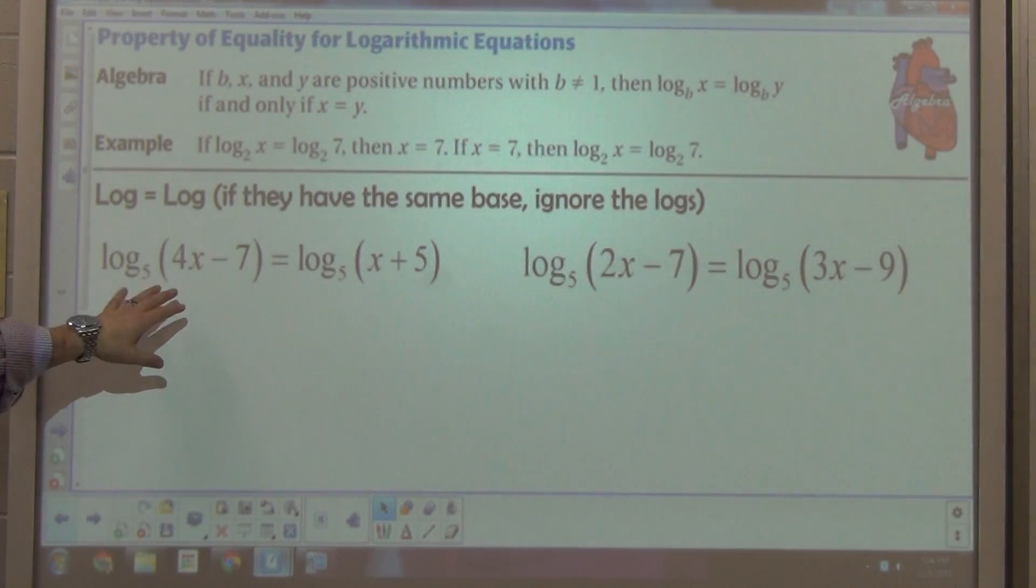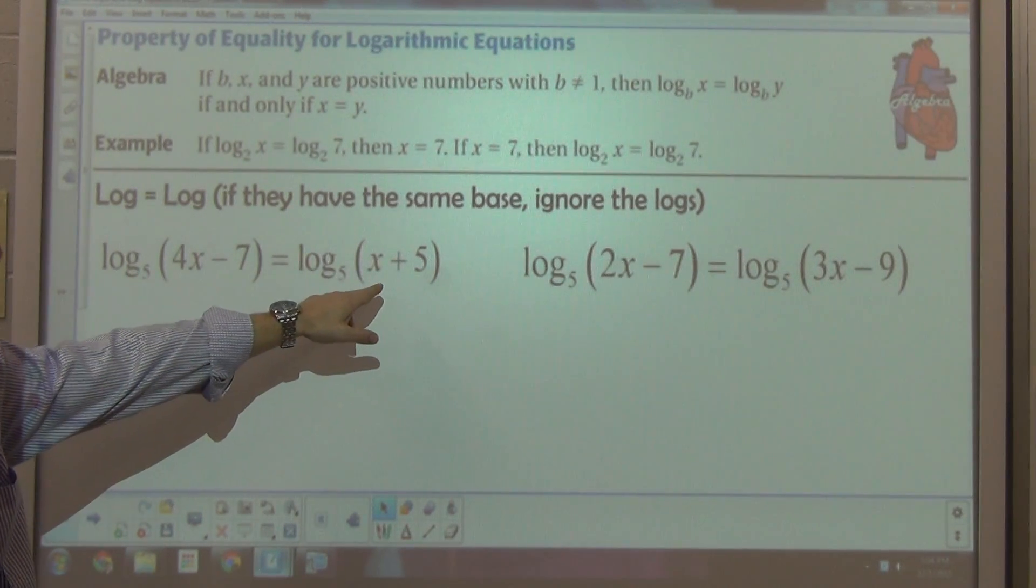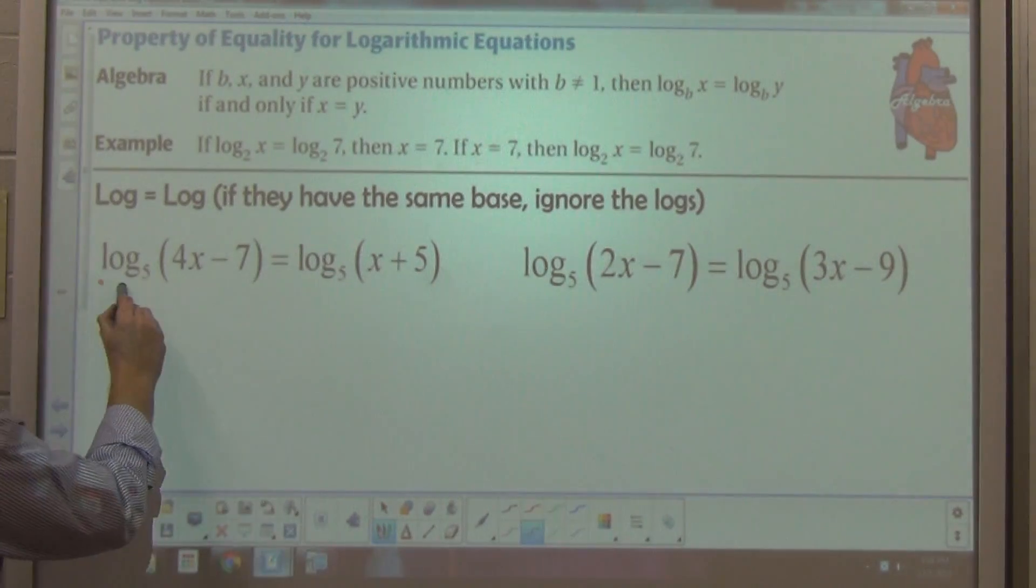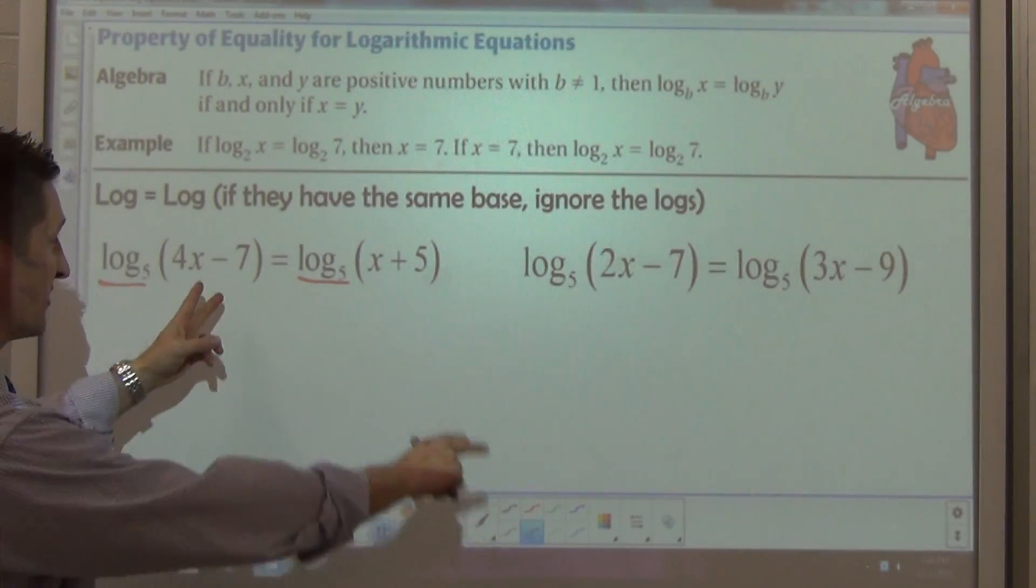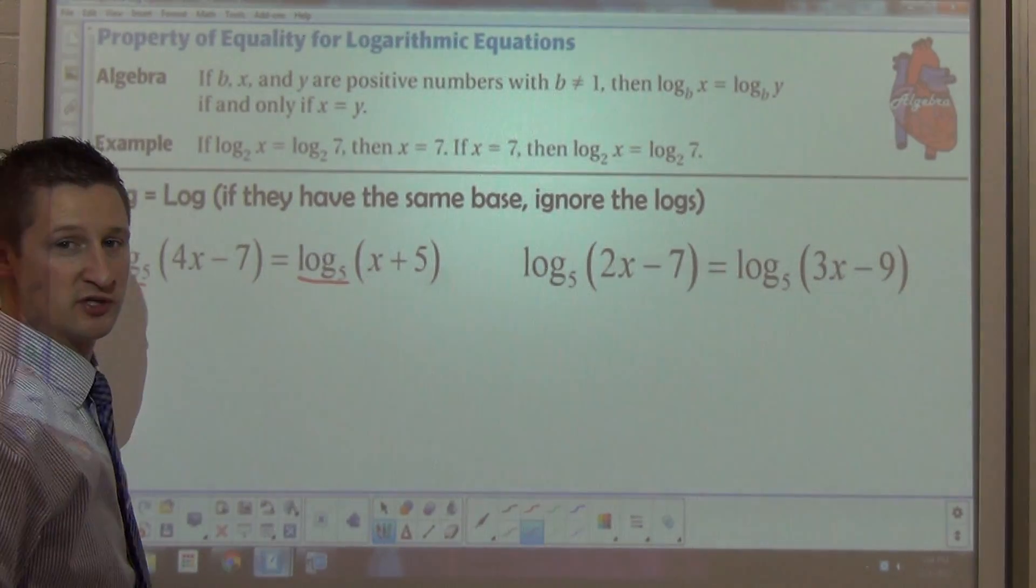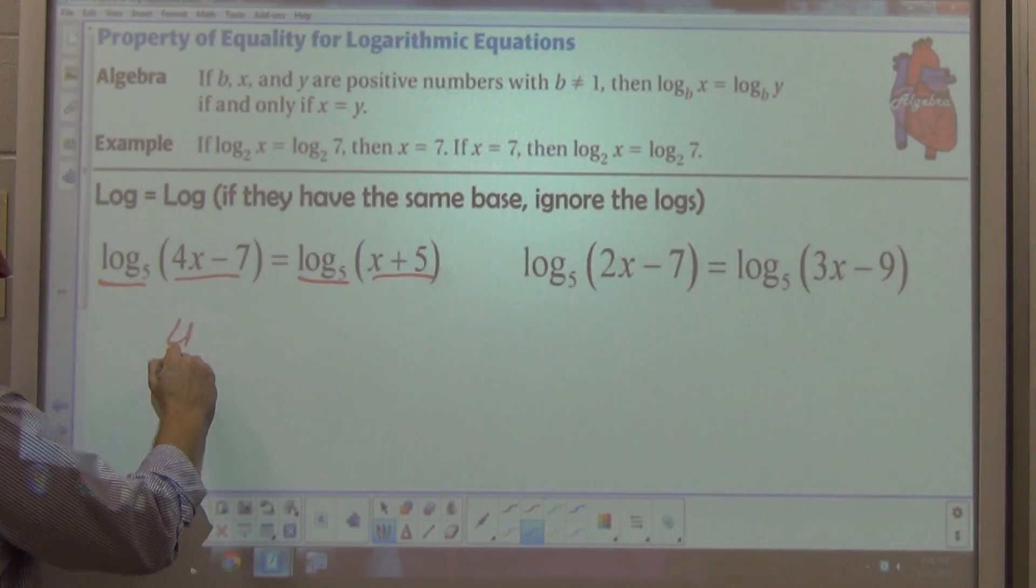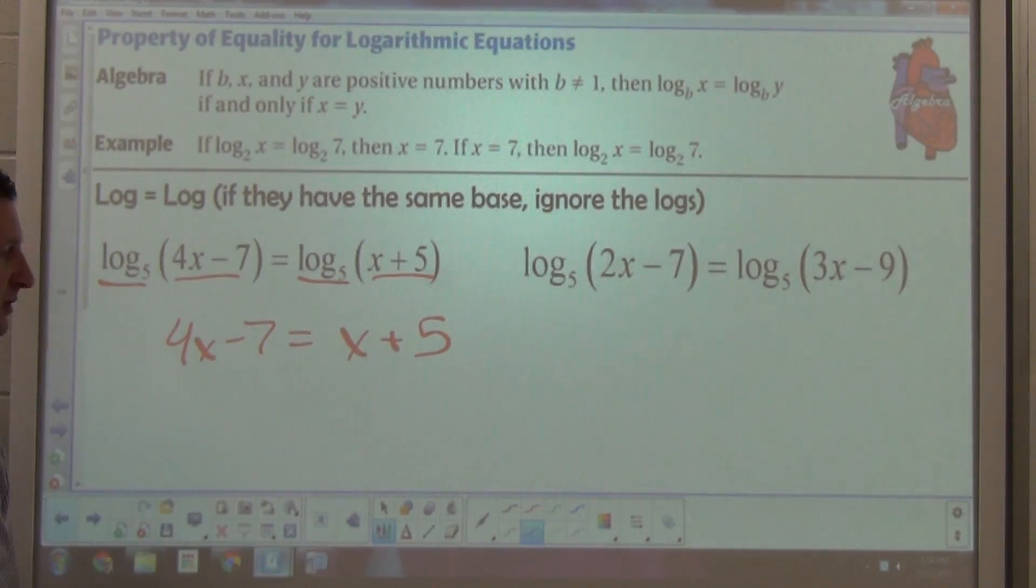If you'll notice this first equation, I have the log base 5 of 4x minus 7 is equal to the log base 5 of x plus 5. Because I see the same expression here and here, this is the log base 5 of both of these, I know that whatever is in the parentheses is going to have to equal each other. I can pretty much ignore the logarithms and just take 4x minus 7 and set it equal to x plus 5 and figure out what that x value might have to be.